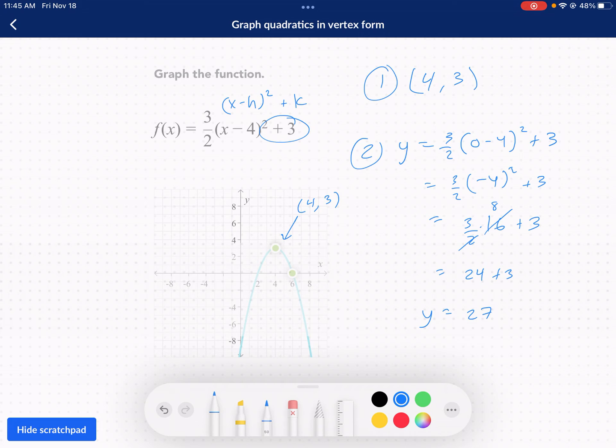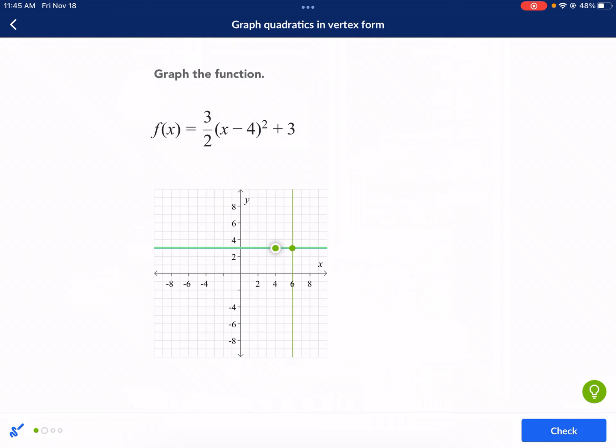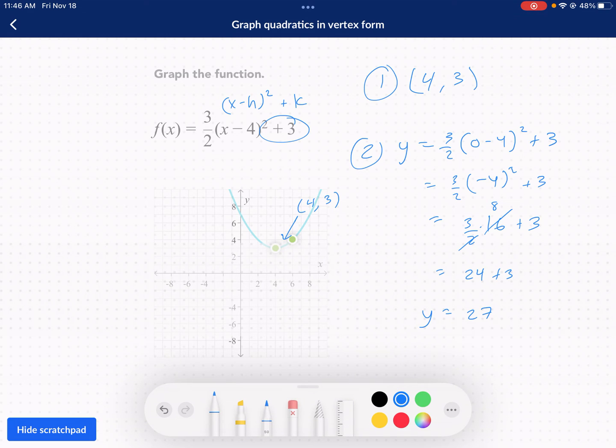Now, this is not good. The reason why it's not good is because I can't put y equals 27 on my graph. So that's a problem. I won't be able to just like go up here and I don't know where 27 is on this graph. So I need to think of a different point. Maybe something a little closer to my vertex.